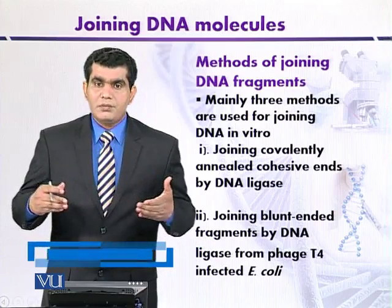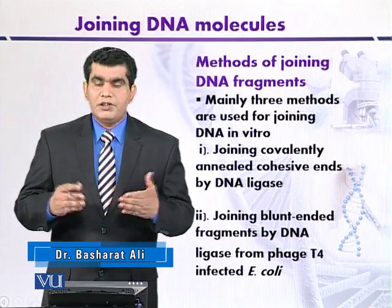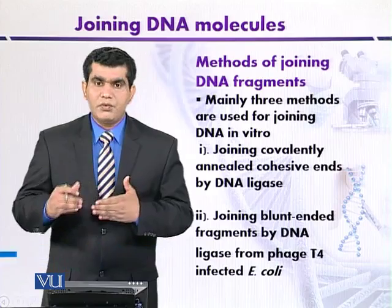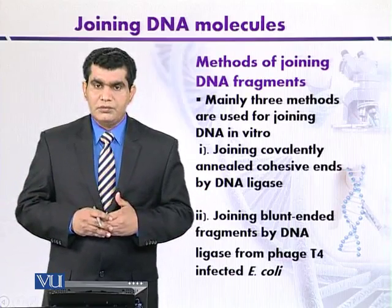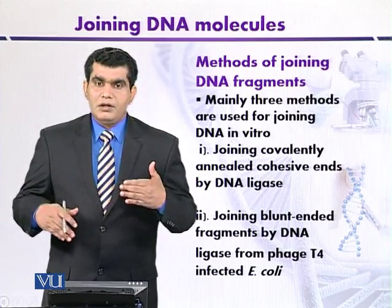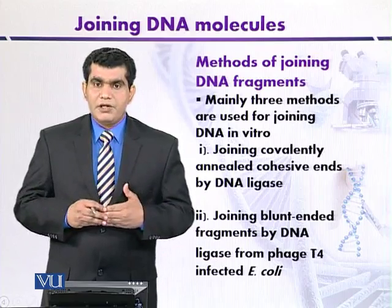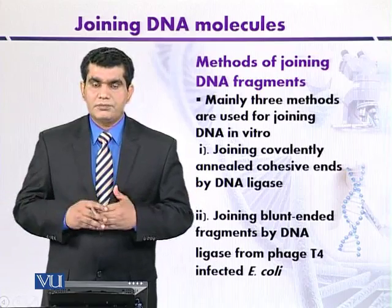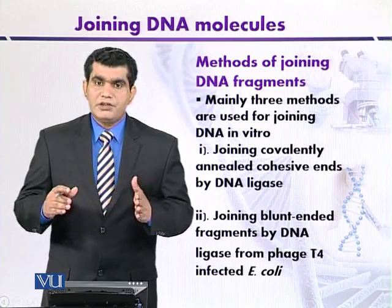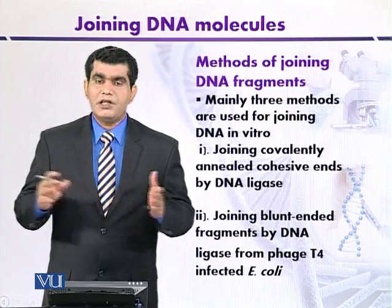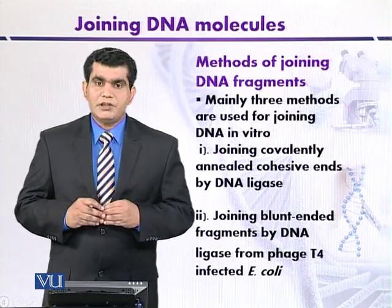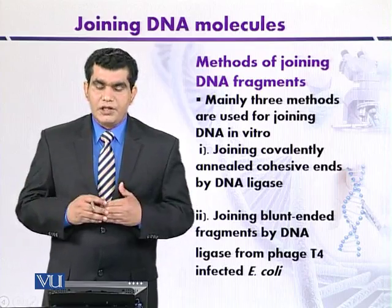Another method also depends on DNA ligase, but the source is different. This DNA ligase is encoded by Phage T4, which can infect E. coli. T4 DNA ligase joins or ligates DNA fragments that have blunt ends. For instance, if the target DNA is digested with a restriction enzyme producing blunt ends, the ligation of those blunt ends is mediated by T4 DNA ligase.